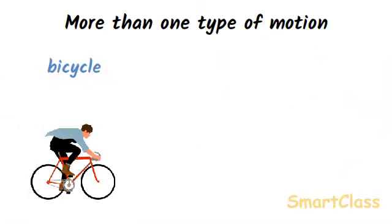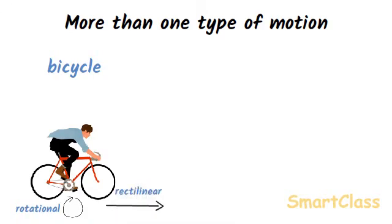Bicycle. Suppose a bicycle is moving on a straight road. The wheels of bicycle is rotating on its axle and also moving forward in a straight line. So, a bicycle has a rotational motion and rectilinear motion at the same time.